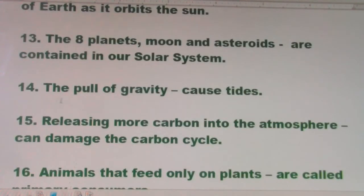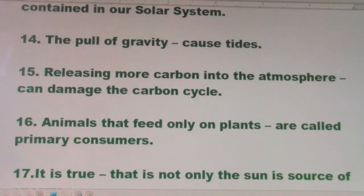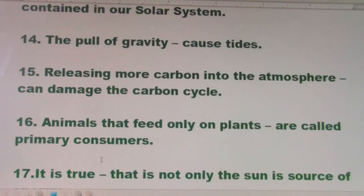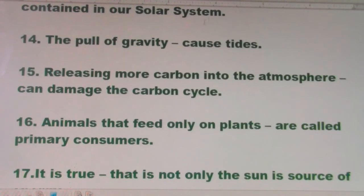Number fourteen: the force of gravity causes tides. Number fifteen: releasing more carbon into the atmosphere can damage the carbon cycle. Number sixteen: animals that feed only on plants are called primary consumers.